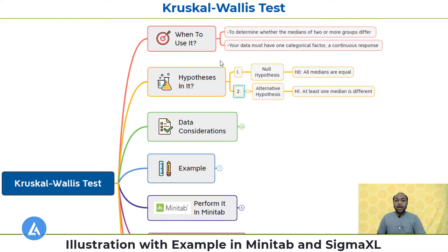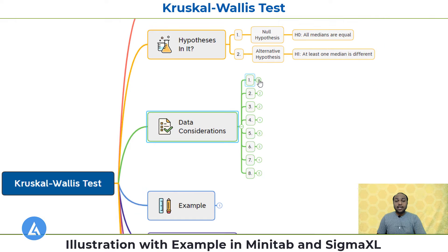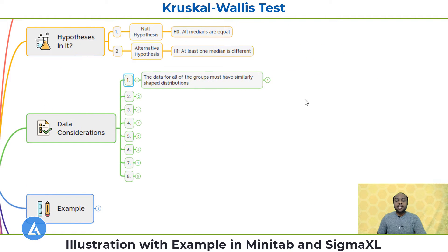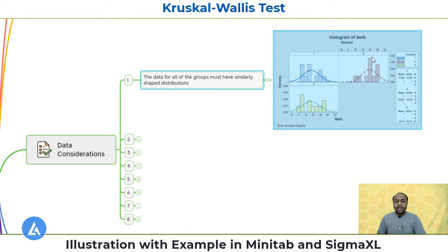After understanding when to apply the Kruskal-Wallis test and its hypotheses, let's understand the different data considerations. There are eight data considerations. The first is that the data for all groups must have similar shape distributions. To check whether distributions are similar, we use a histogram. Here we can see the three groups are having similar shape distributions, which we will verify with the practical example.